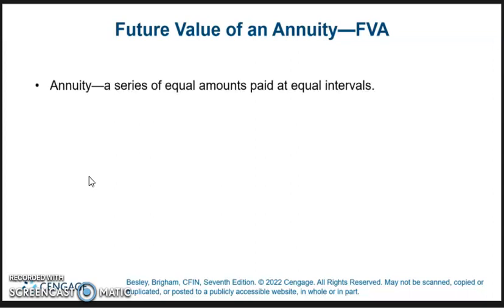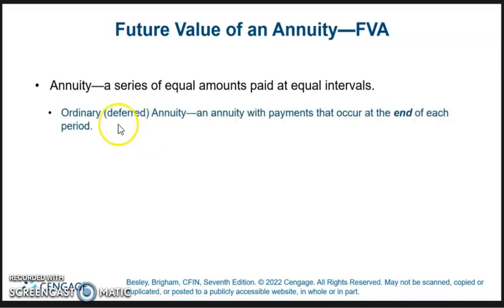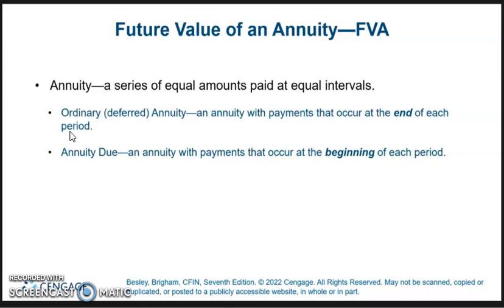Annuity is a series of equal payments made over equal intervals. We have an ordinary annuity, which is the default for your calculator and for Excel. The vast majority of payments are made at the end of the period. Then we have what's called an annuity due, which is payments made at the beginning of the period.